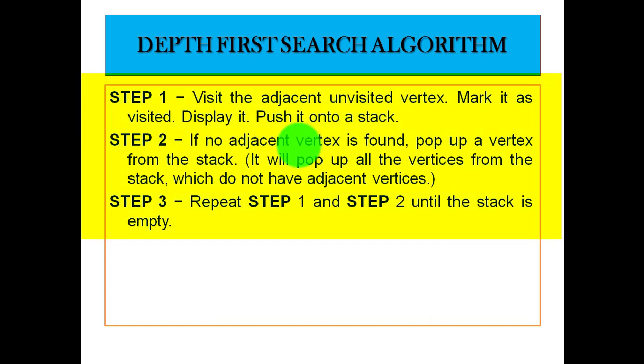Step 3 says repeat Step 1 and Step 2 until the stack is empty. At Step 1 we visit the unvisited adjacent vertex. In Step 2, if no adjacent vertex is found, we pop up a vertex from the stack. It will pop up all the vertices from the stack which do not have adjacent vertices. Step 3 is the repetition of Step 1 and Step 2 until the stack is empty. Let's consider an example that will help you understand these steps in a better way.